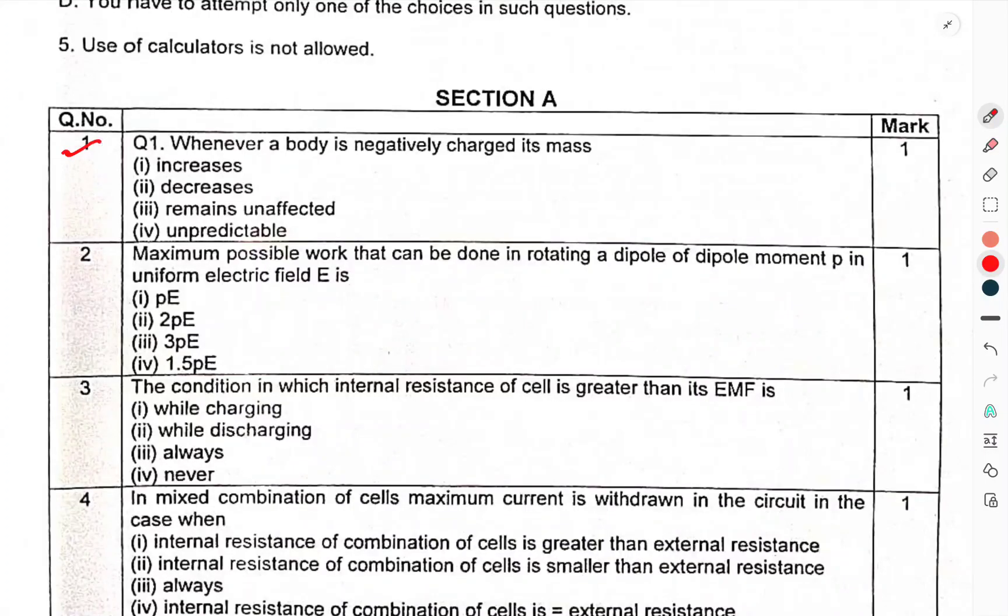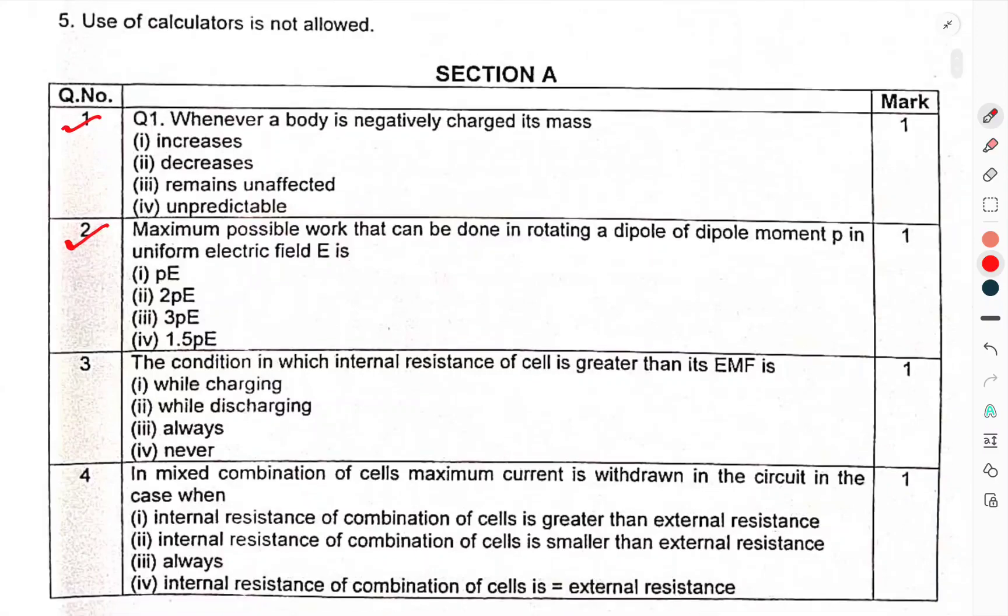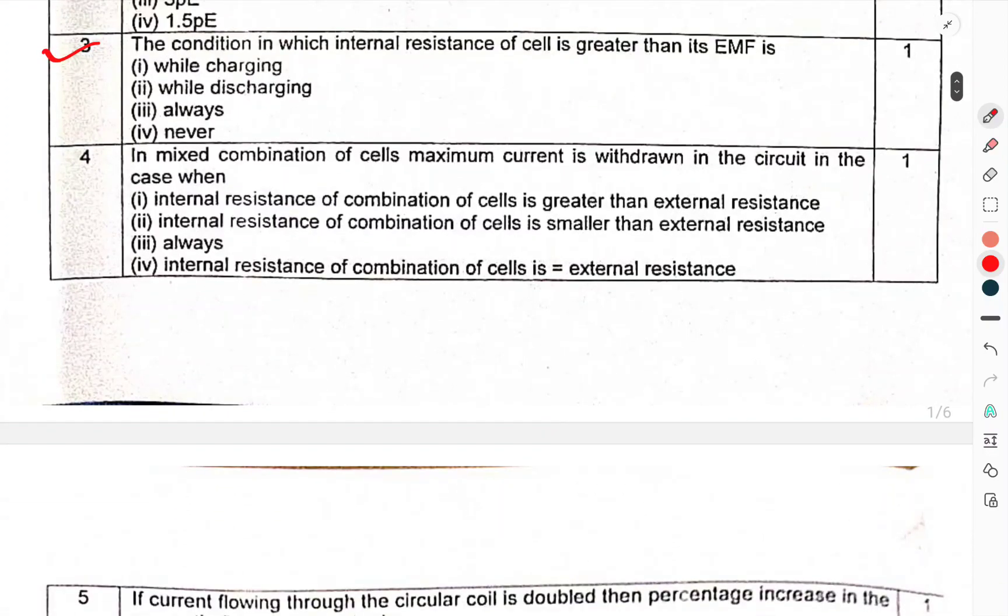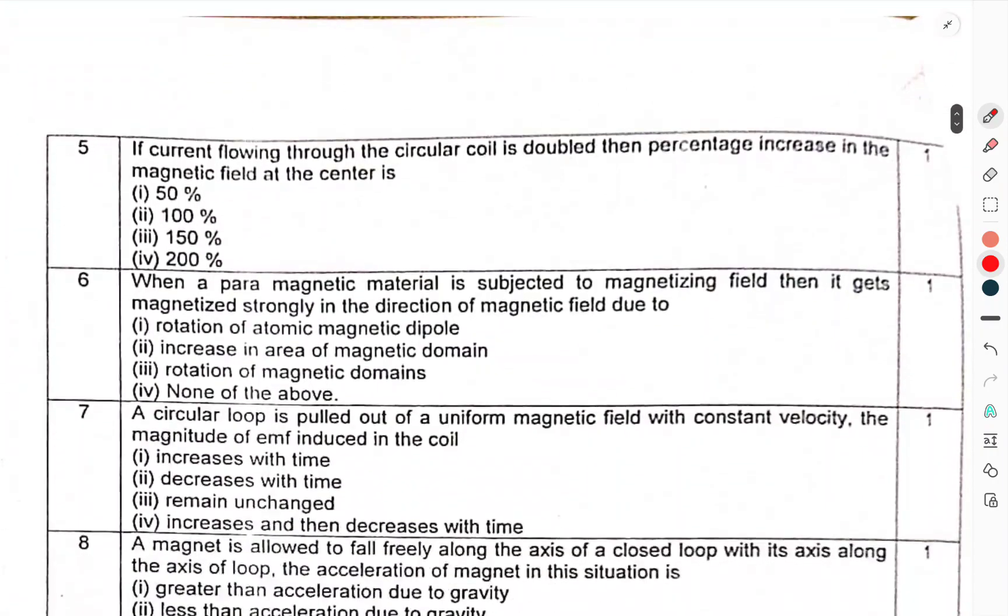Question 1: Whenever a body is negatively charged, its mass. Question 2: Maximum possible work that can be done in rotating a dipole of dipole moment p in uniform electric field E is. Question 3: The condition in which the internal resistance of the cell is greater than the EMF is. Question 4: In mixed combination of cells, maximum current is withdrawn in a circuit in the case when? You have to choose the correct option.